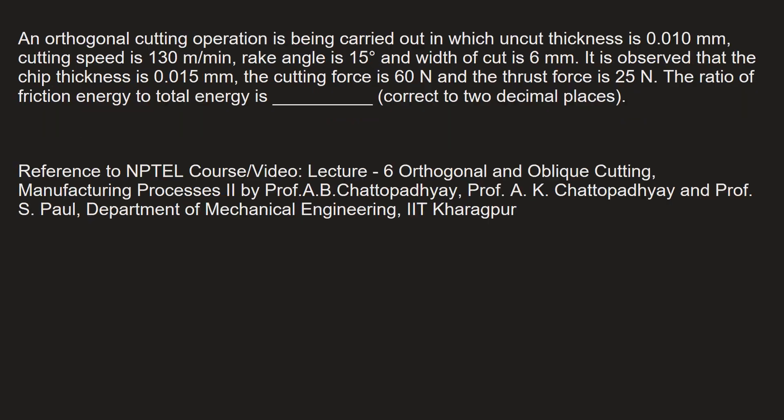The required ratio, friction energy upon total energy, can be written as friction force times velocity of the chip.